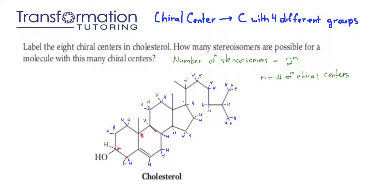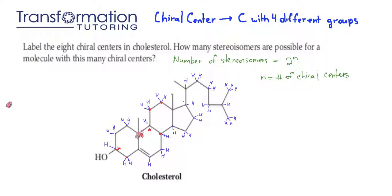Let's go to this carbon next. It's connected to a hydrogen, which is different from the rest. It's also connected to a carbon here, a carbon here, and a carbon here. The carbon on the left is connected to three carbons. The carbon on the right is only connected to one carbon, and the carbon in this position is connected to two carbons. So all the carbons are different — we found points of difference and therefore this is a chiral carbon as well.